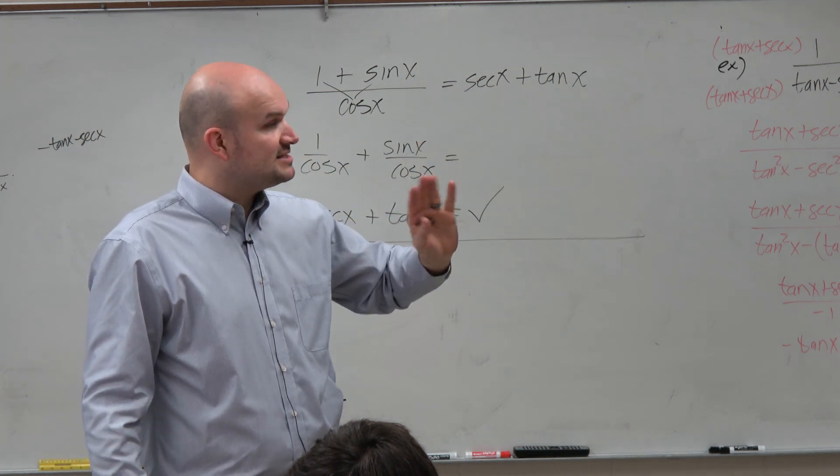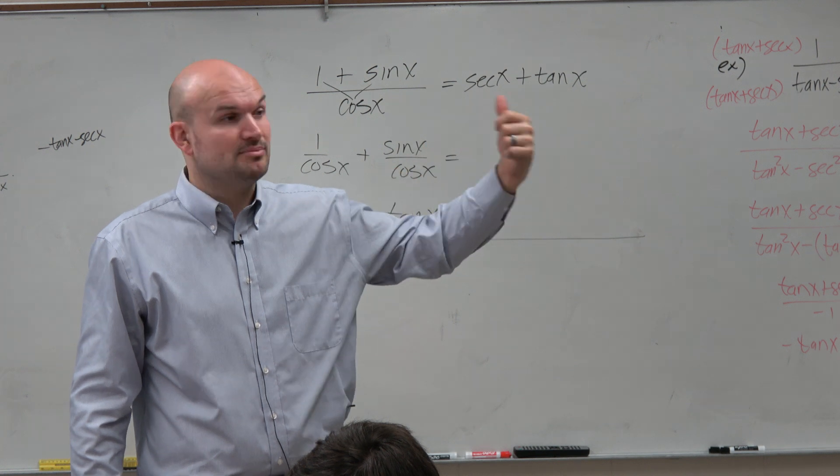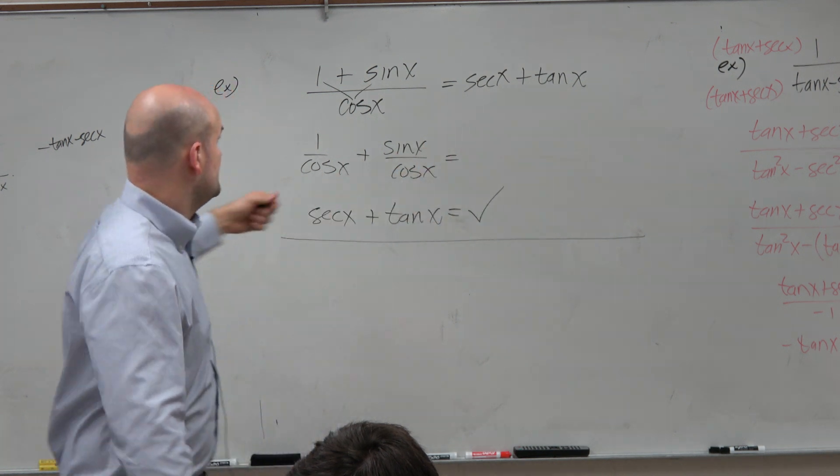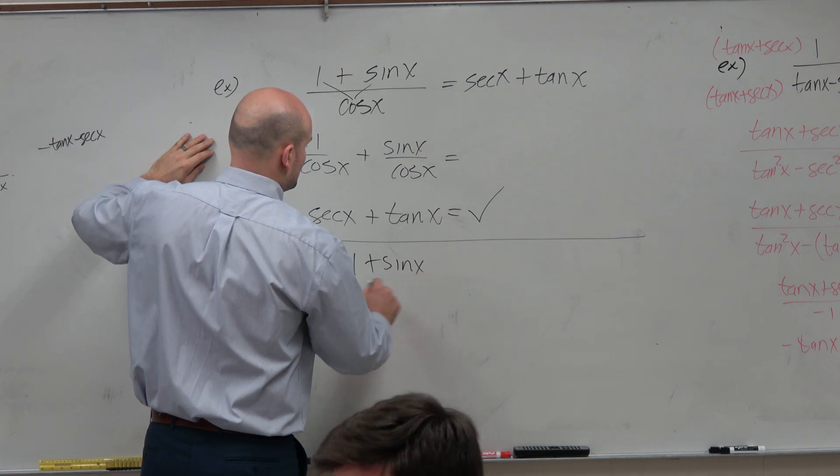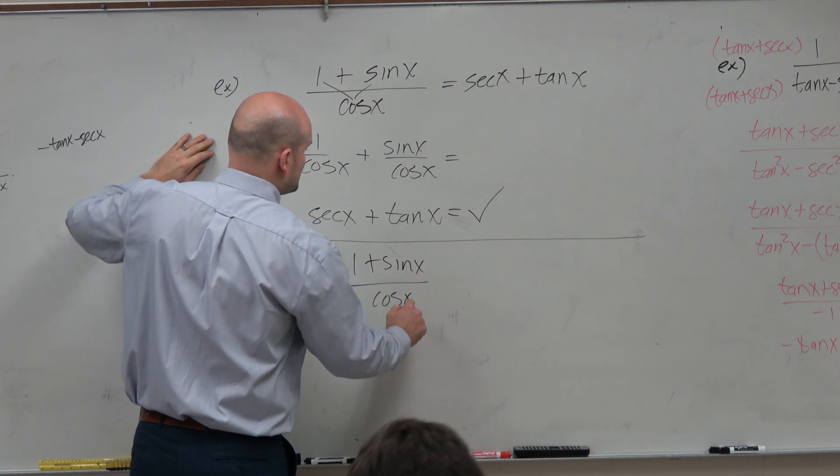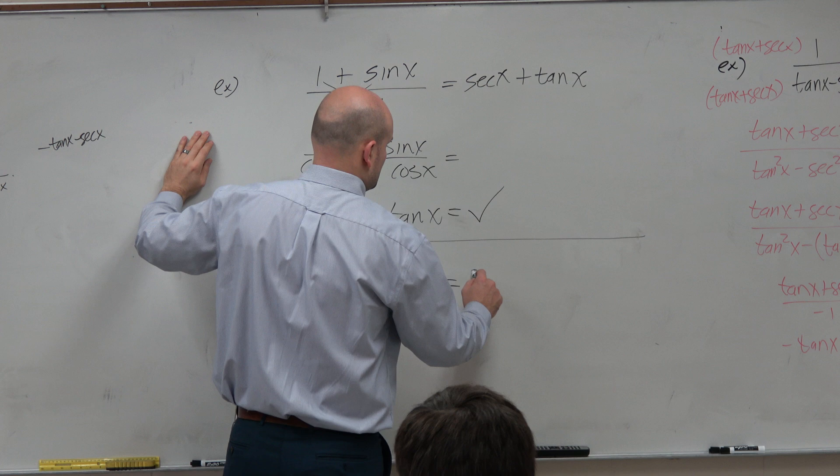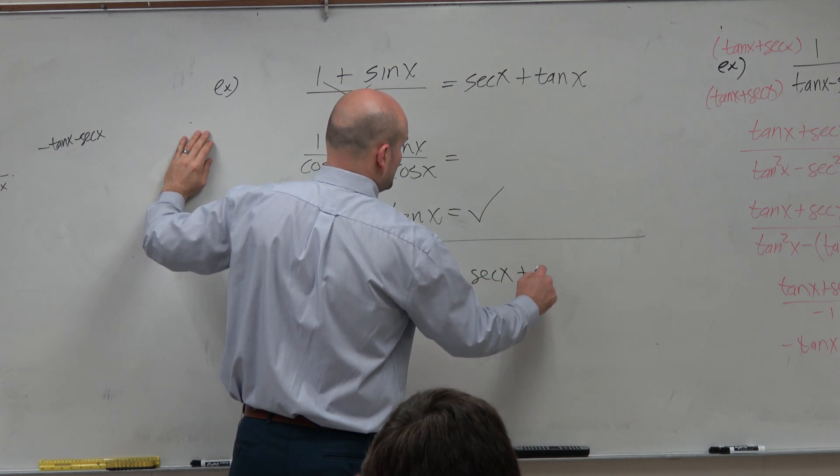Also think about, sometimes it just takes multiplying by a certain value. So for instance, let's do this another way. 1 plus sine of x over cosine of x equals secant of x plus tangent of x.